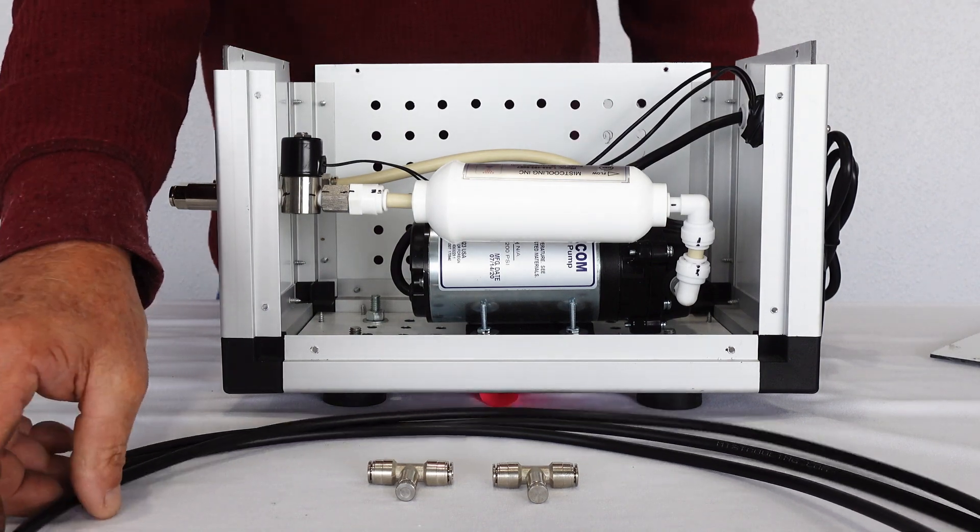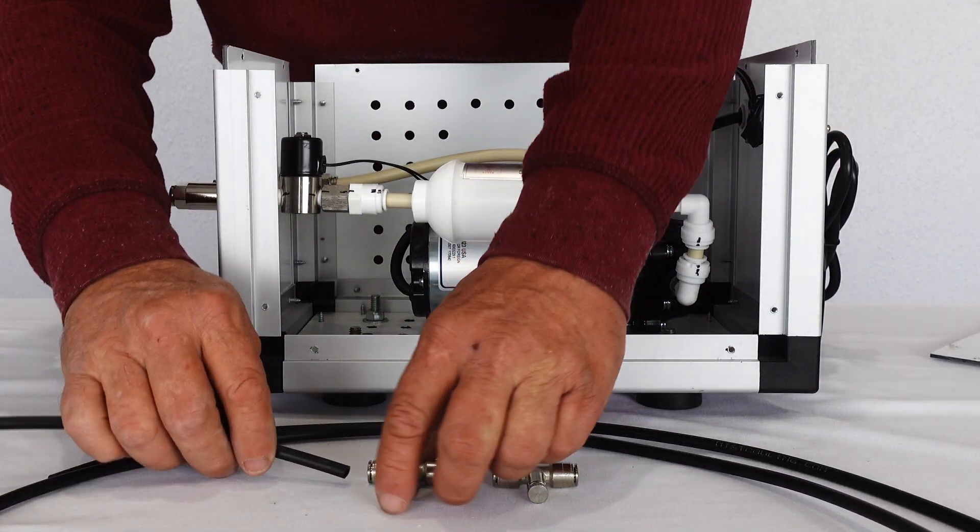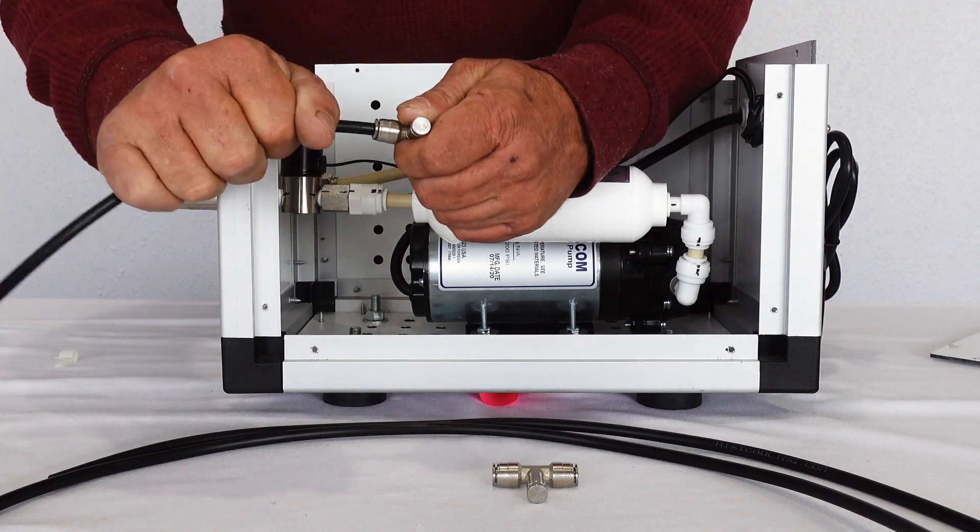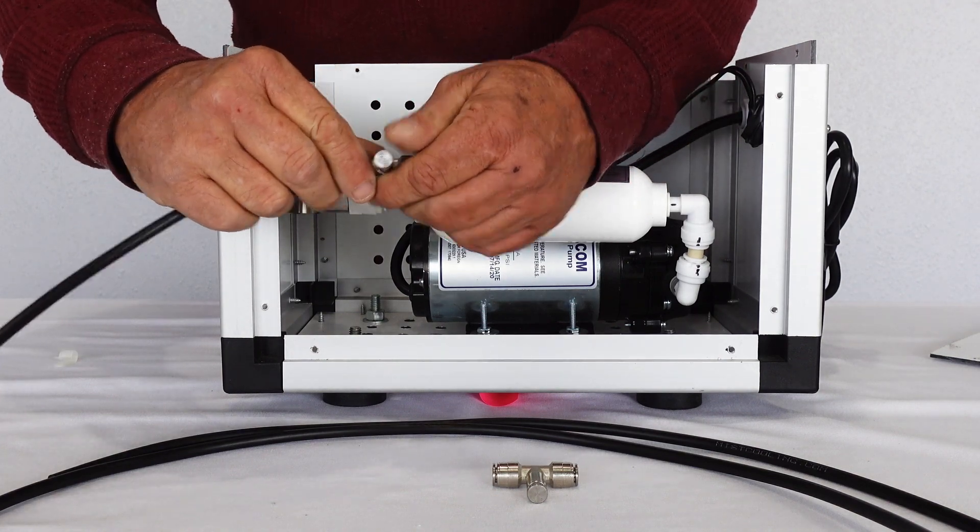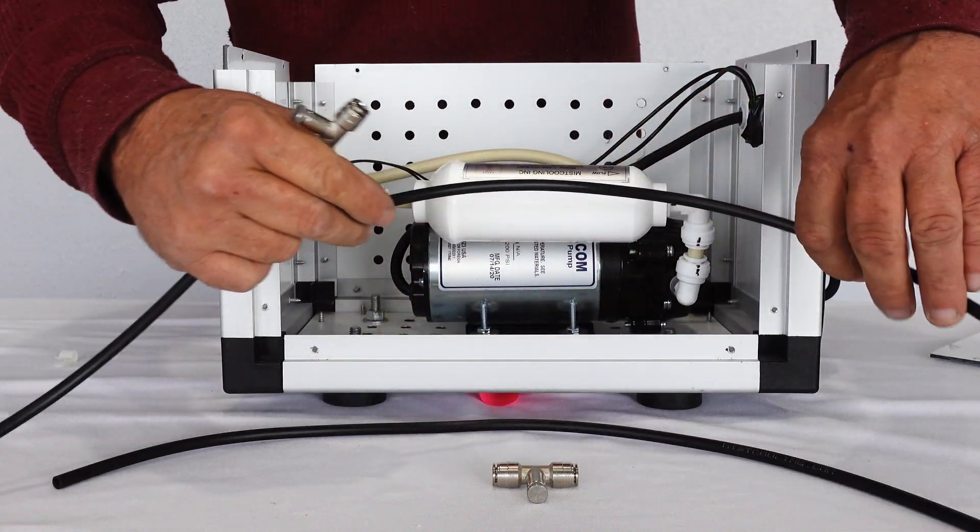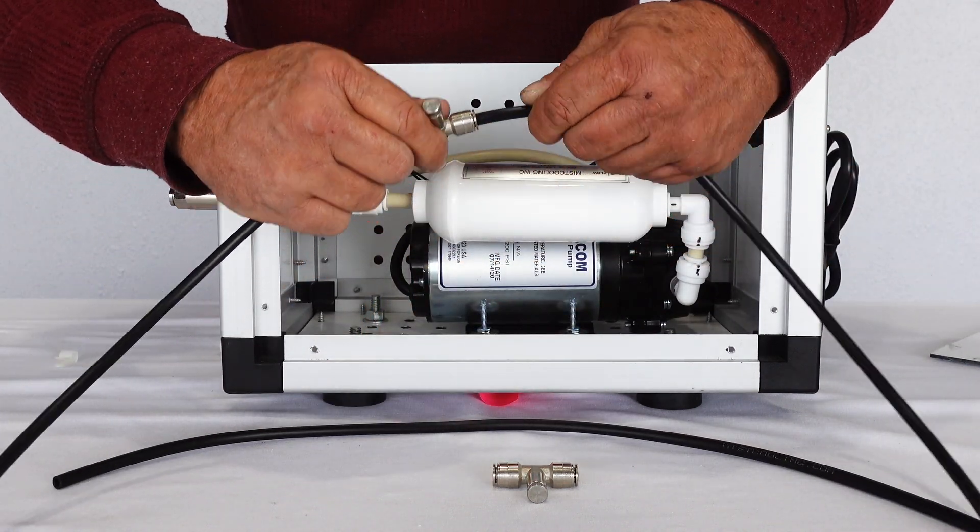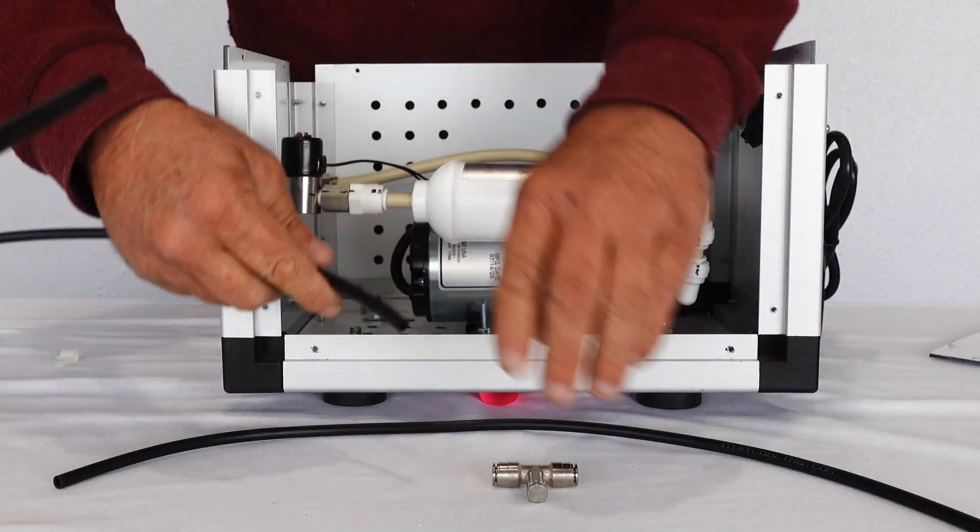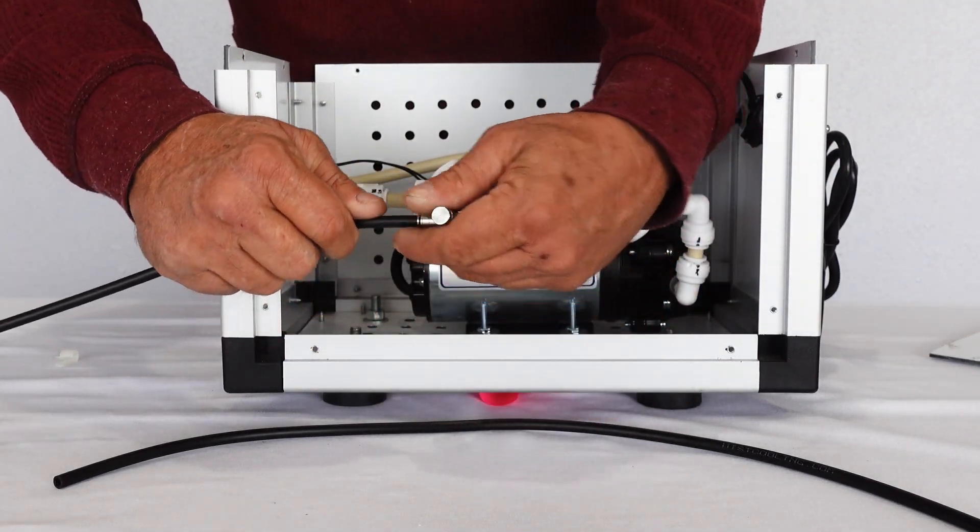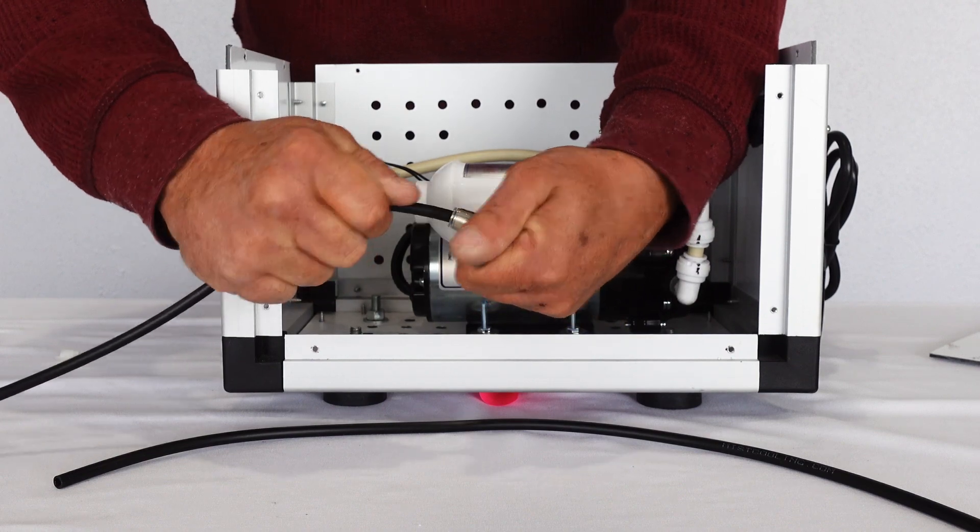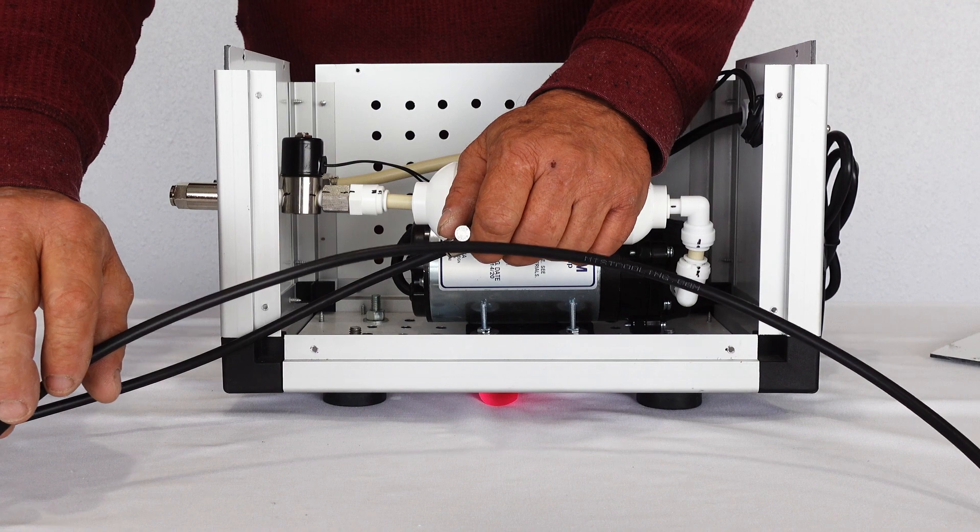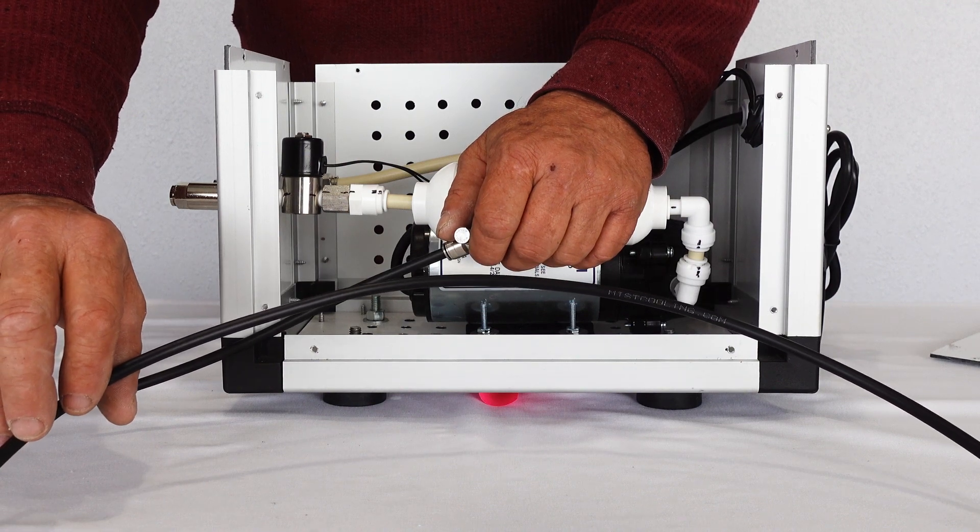Take your tubing, push in to the ends of the push locks. Just push them until they stop. And we recommend that you cut this tubing two or three foot, your discretion.